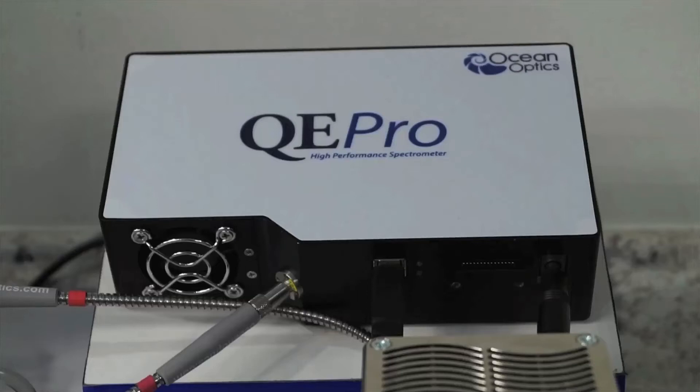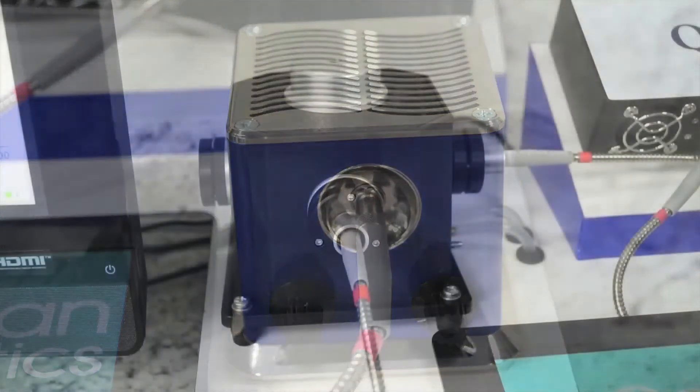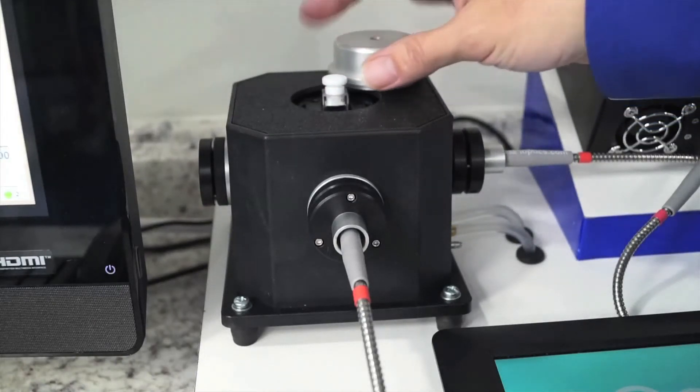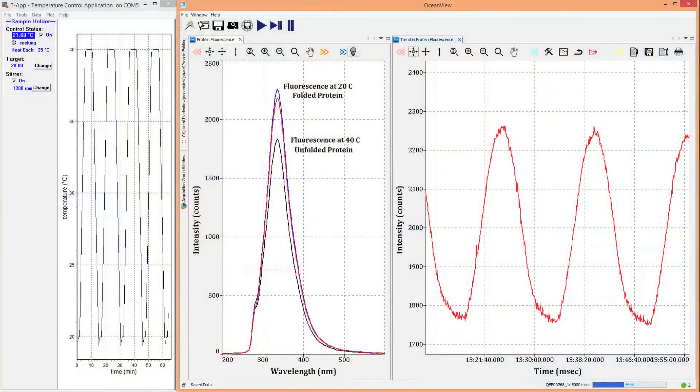We'll be using fluorescence to characterize protein folding with excitation provided by the LLS LED. In this case, we're using excitation at 280 nm. We place a quartz cuvette filled with sample in our temperature-regulated cuvette holder, the QPod, and we ramp the temperature between 20 and 40 degrees Celsius.